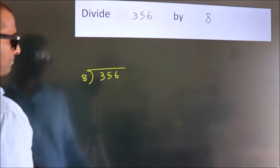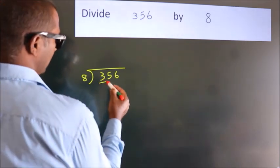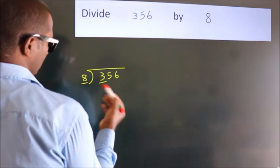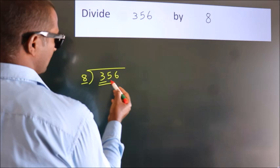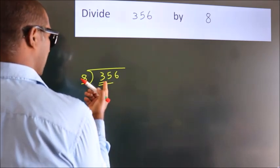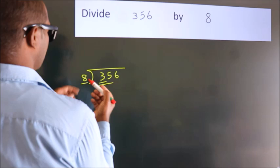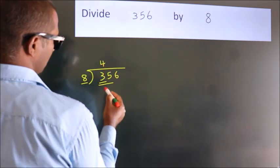Next, here we have 3, here 8. 3 is smaller than 8. So we should take two numbers, 35. A number close to 35 in the 8 table is 8 times 4 is 32.